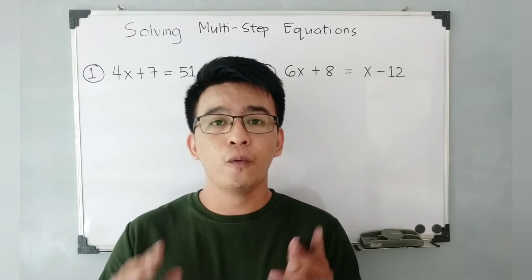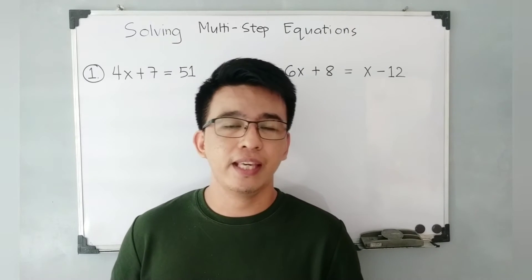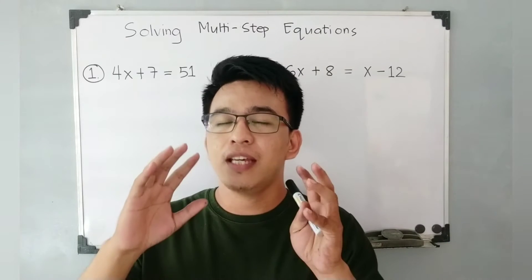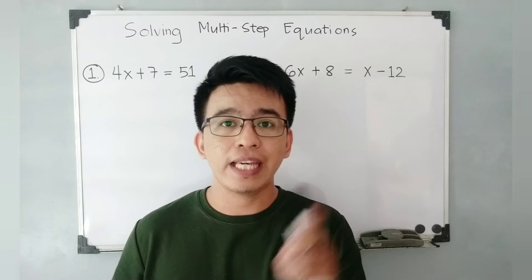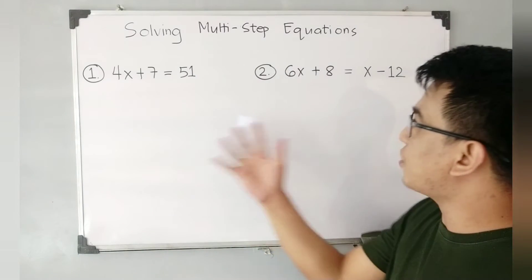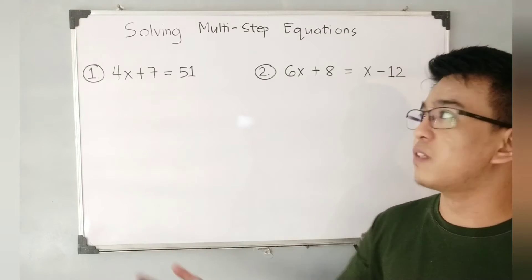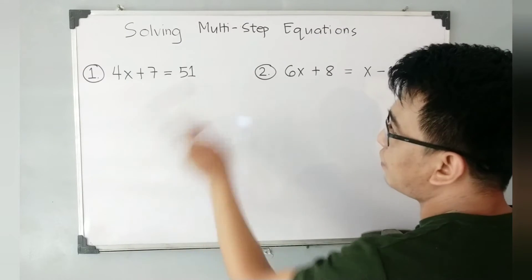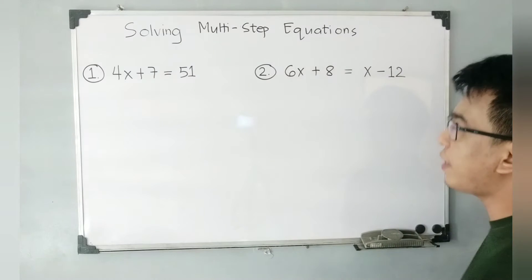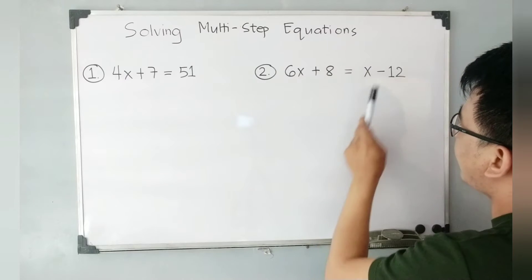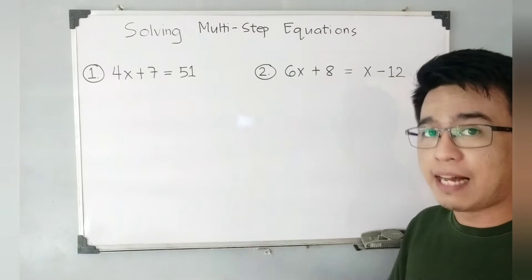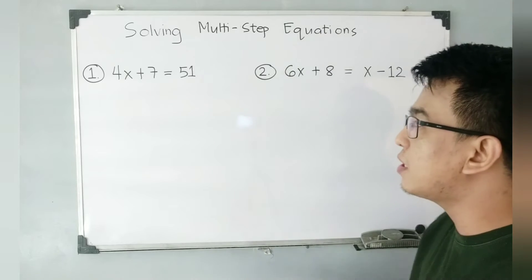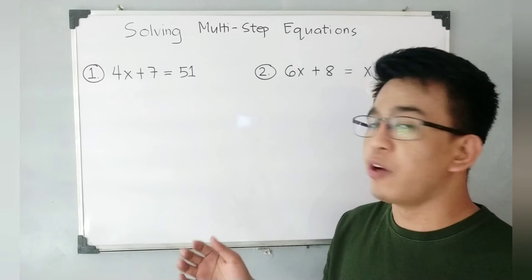So basically, let's have a review first. What is meant by the word equation? An equation is a statement that simply implies that the two given expressions are equal, and it uses the symbol of the equal sign. So I have here two equations. In number one, we have 4x plus 7 is equal to 51. In number two, we have 6x plus 8 is equal to x minus 12. These two are examples of linear equations because the degree of the given equations is equal to 1.